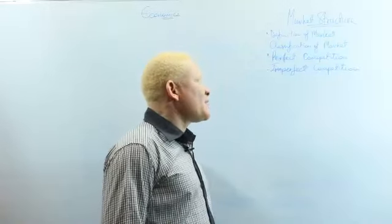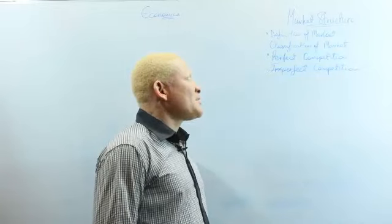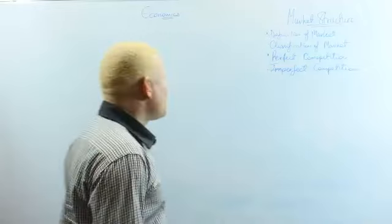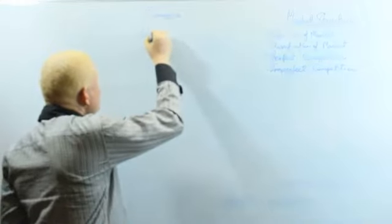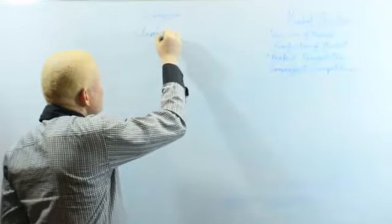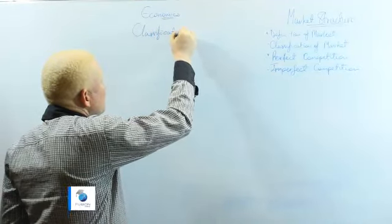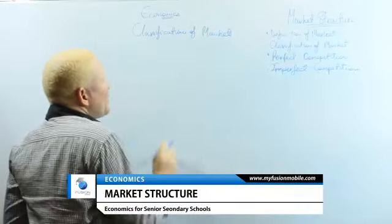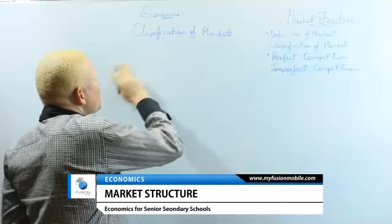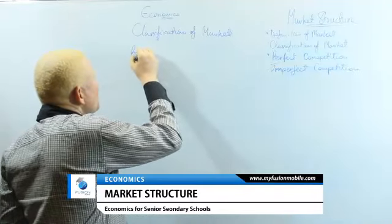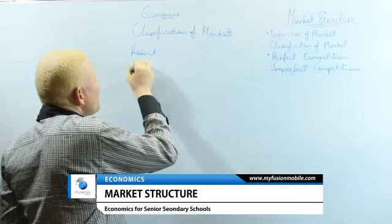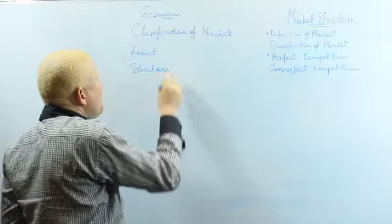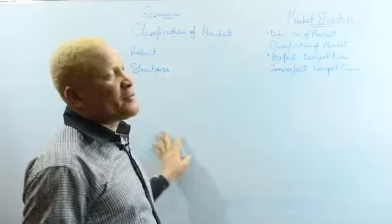The next point on our outline, after the definition of markets, is the classification of markets. Markets can be classified from two perspectives: according to products and according to structures. That is where the topic comes from — market structures.